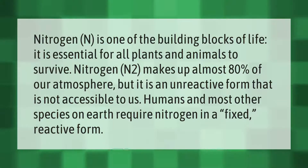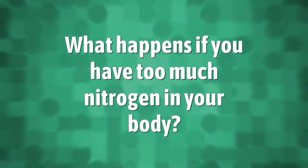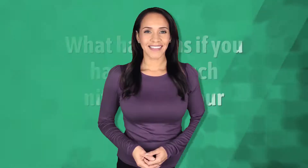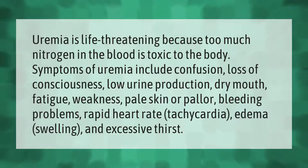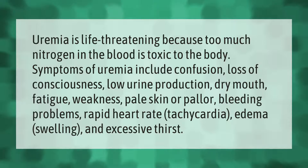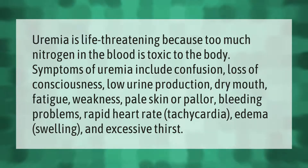Uremia is life-threatening because too much nitrogen in the blood is toxic to the body. Symptoms of uremia include confusion, loss of consciousness, low urine production, dry mouth, fatigue, weakness, pale skin or pallor, bleeding problems, rapid heart rate (tachycardia), edema, swelling, and excessive thirst.